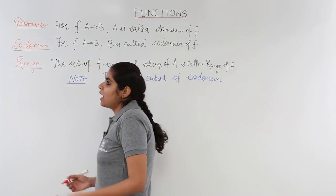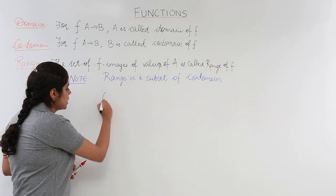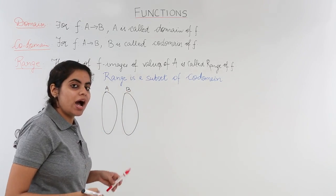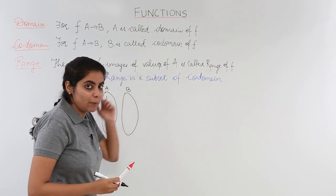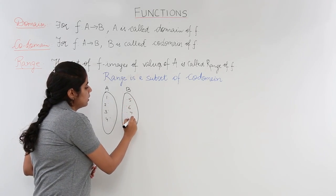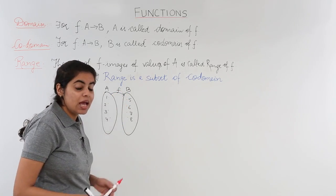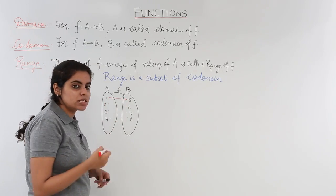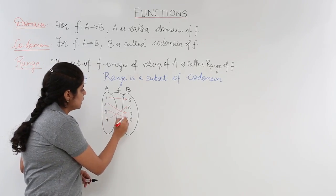Suppose I have two non-empty sets A and B. A has 4 elements: 1, 2, 3, 4, and B has 4 elements: 5, 6, 7, 8. They are associated with some rule F. From this association, 1 is associated with 5, 4 is associated with 6, 2 is associated with 7, and 3 is associated with 8.